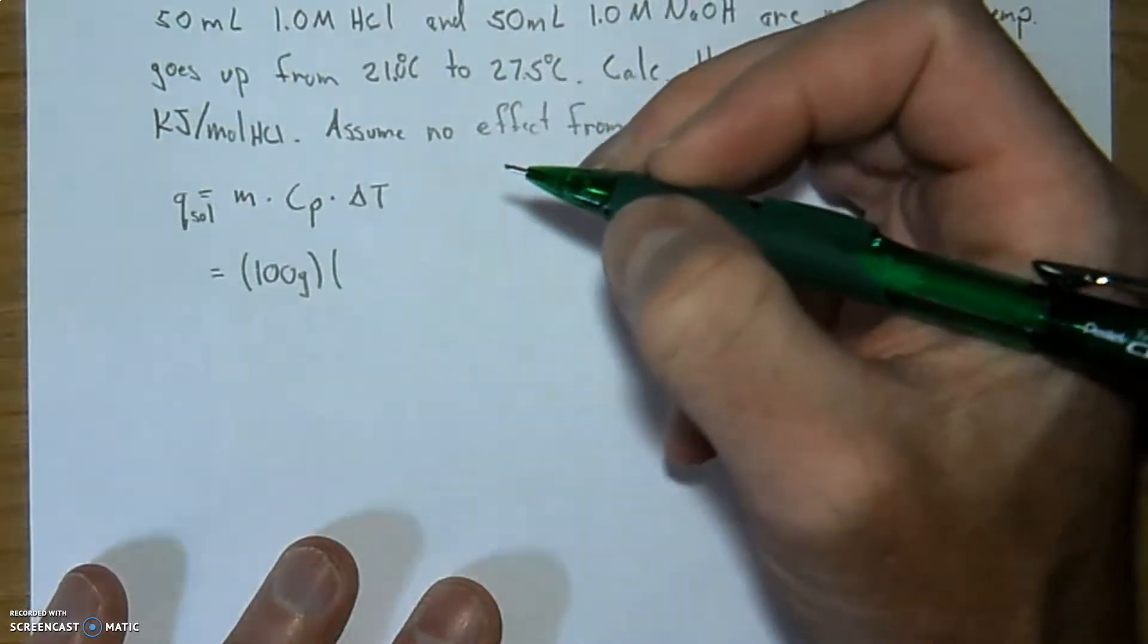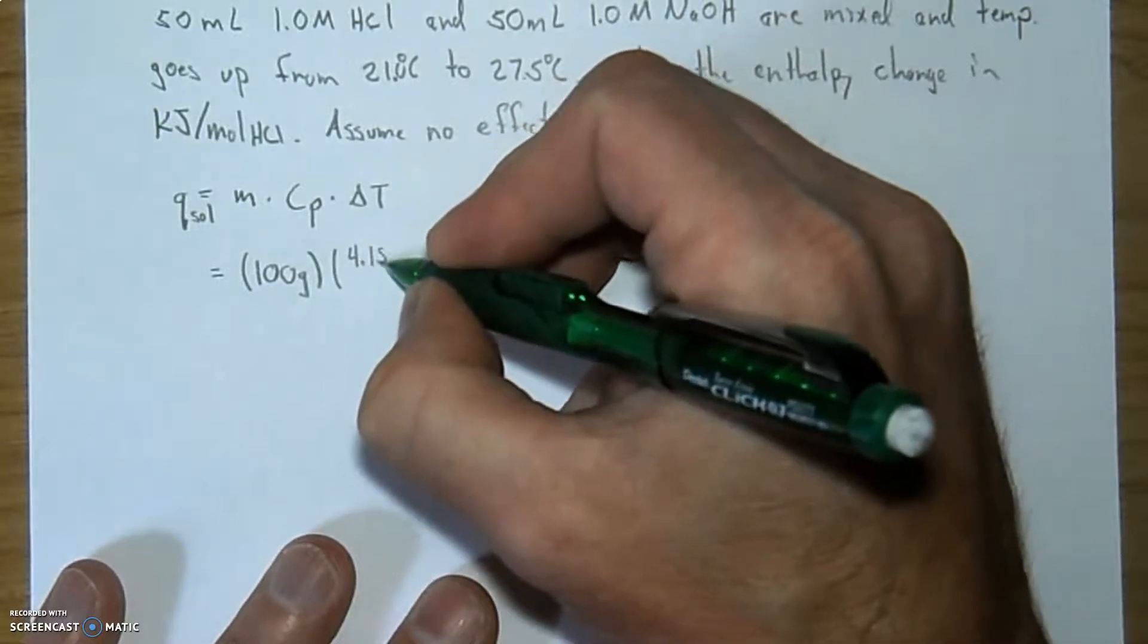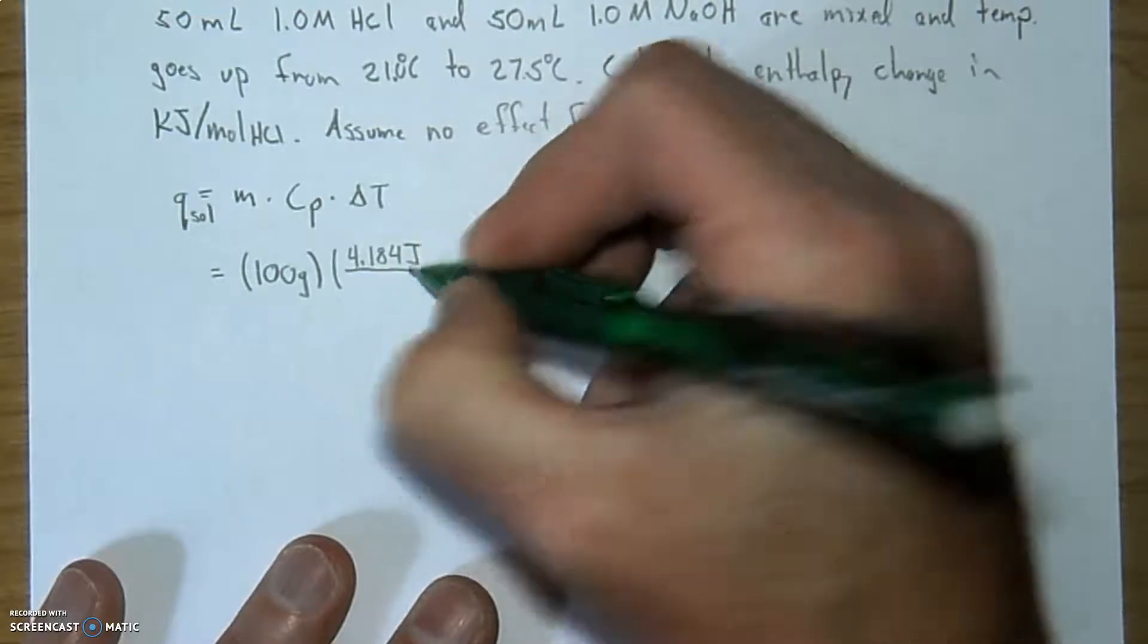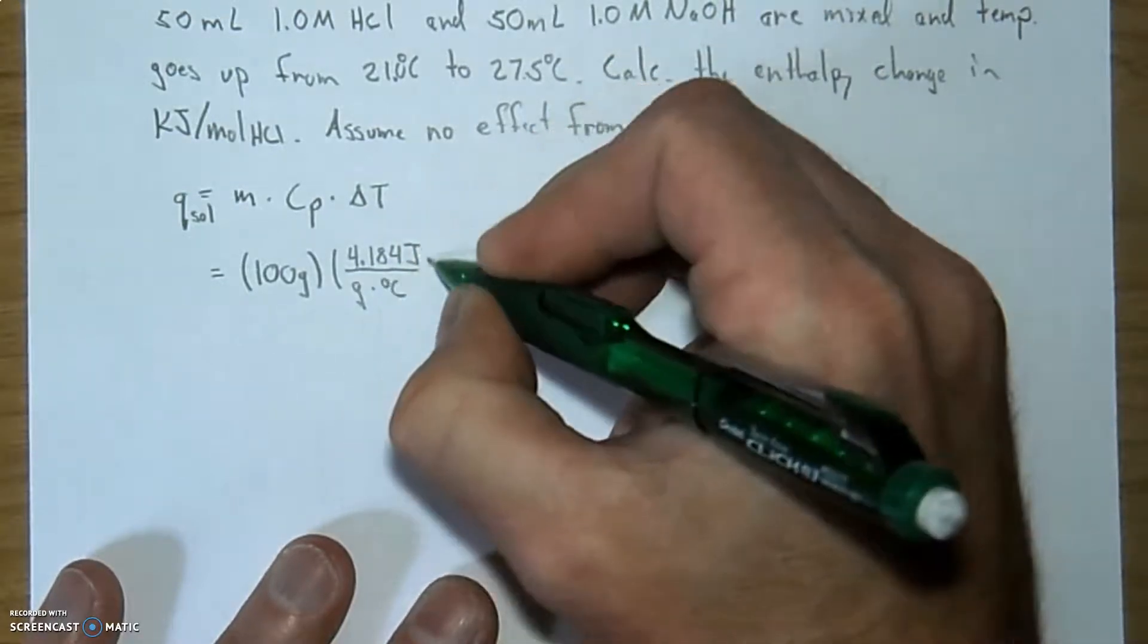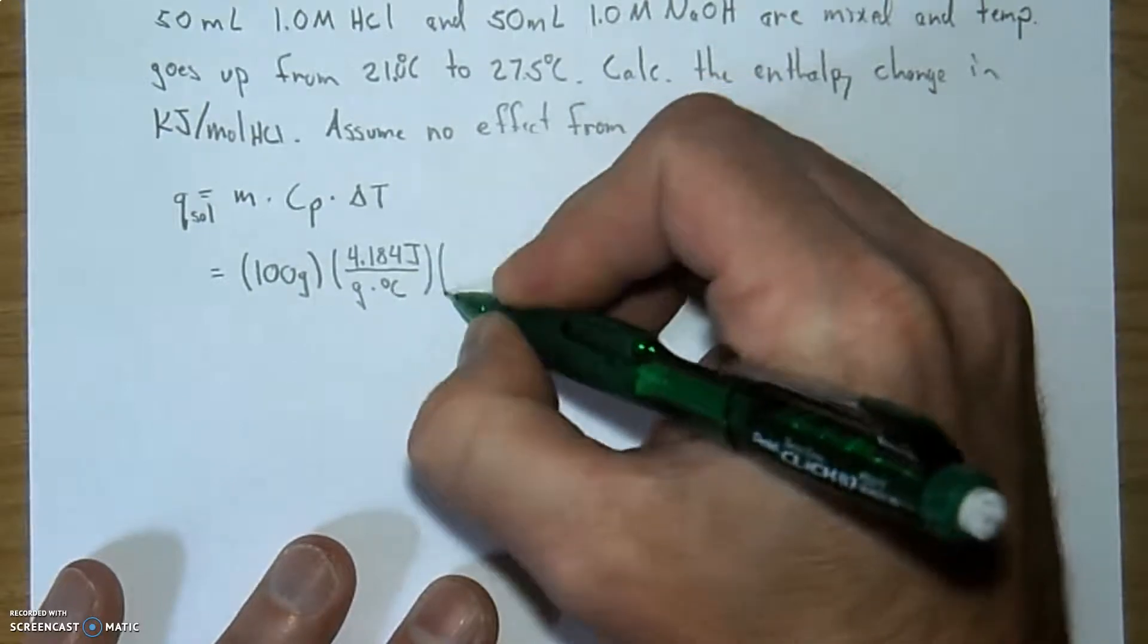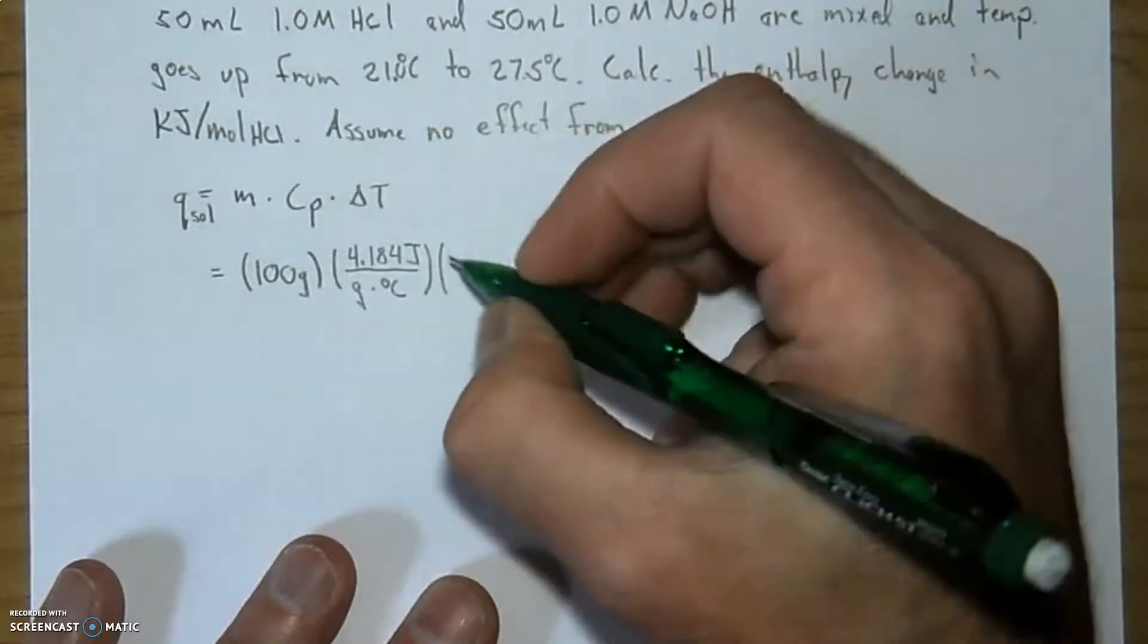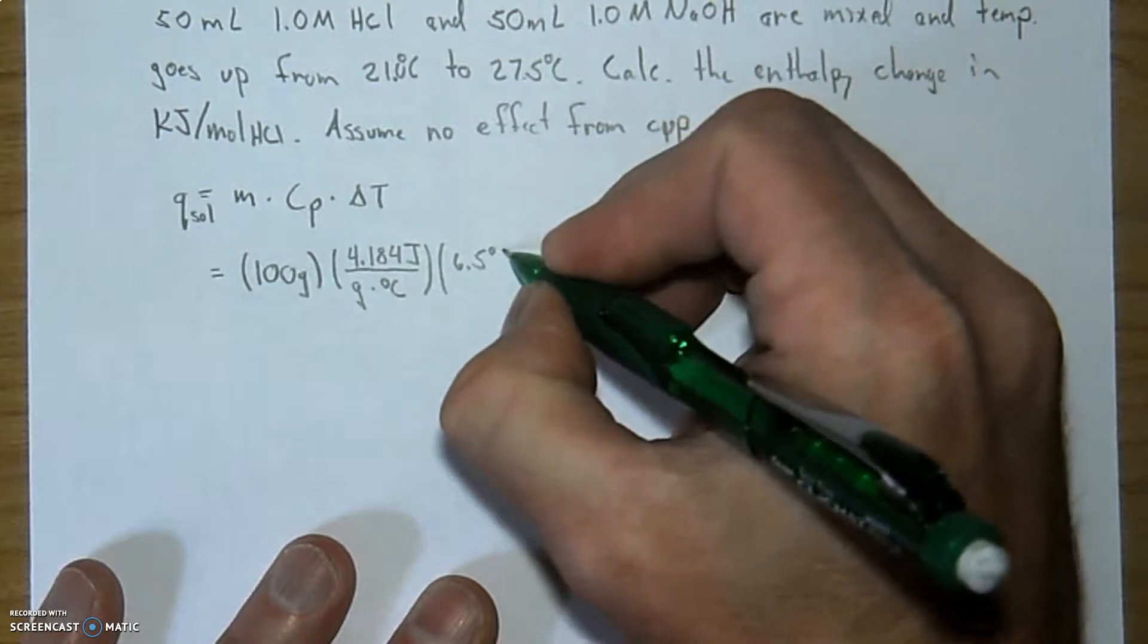The specific heat value for water, which we're measuring, is going to be 4.184 joules, being very specific, not kilojoules but joules, grams per degree Celsius. And based on the change in temperature that we have in this problem, it's changed temperature by 6.5 degrees Celsius.